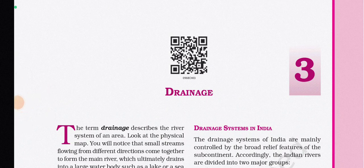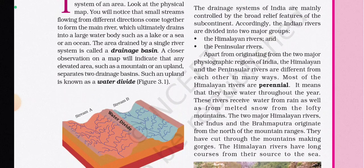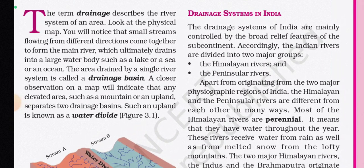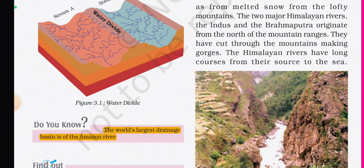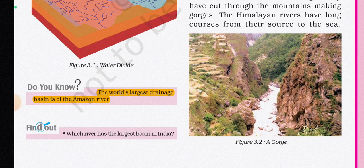Welcome back. We are studying NCERT Class 9 Geography, Chapter 3 — Drainage of India. The term drainage describes the river system of an area. Small streams flowing from different directions come together to form the main river, which ultimately drains into a large water body such as a lake, sea, or ocean. The area drained by a single river system is called a drainage basin.